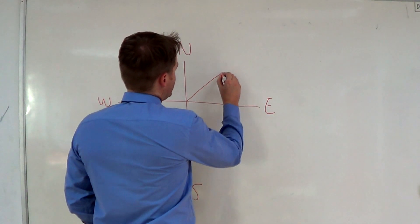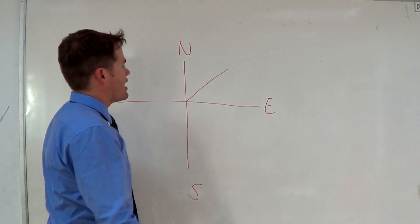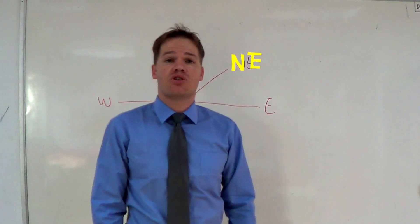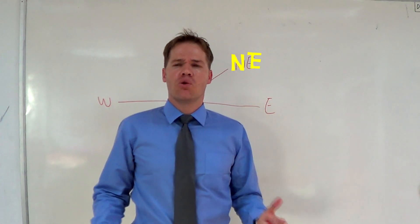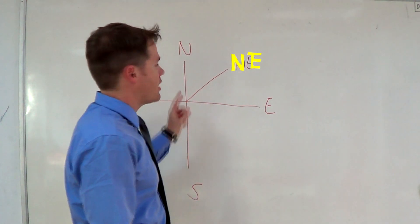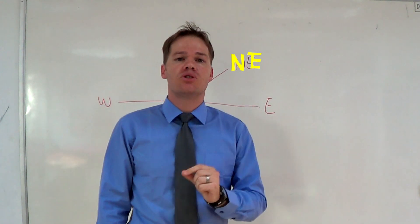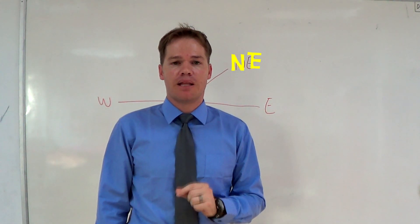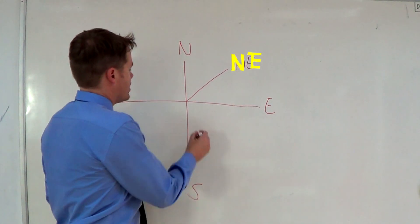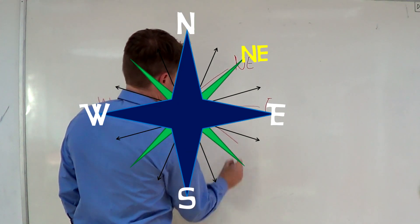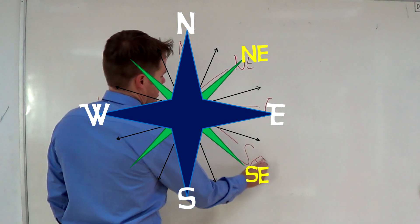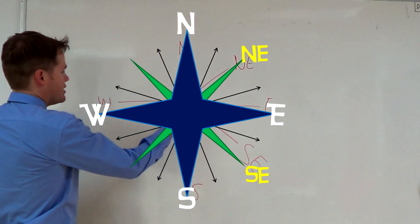Now we need to understand what is exactly between north and east. Some of my students ask me why we say north-east and not east-north. The reason is simple: north and south are your two most important directions on a compass, so they will always come first. Now we need to know what is over here, and once again south is more important so we say south-east, not east-south.